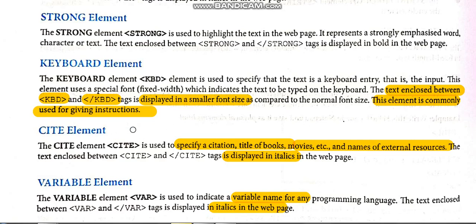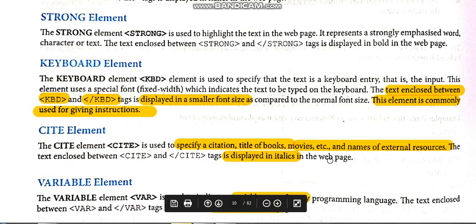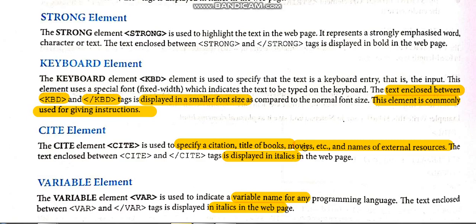Next is the cite element. The cite element is also a container element. The text you write within the cite tags is displayed in italics in the web page. It is basically used to specify a citation, title of books, movies, etc. In cases where you are writing the title of a book or movie in the web page, you write those within the cite tags so that the title is displayed in italics font.